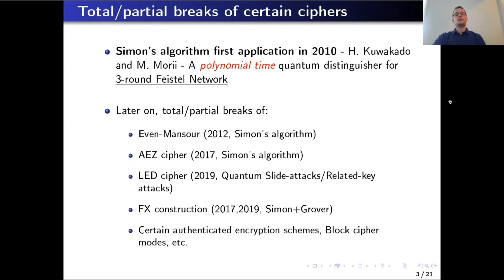The attention of the community in quantum cryptanalysis of block ciphers started in 2010 after the work of Kuwakado and Mori, in which they applied Simon's algorithm for the first time to construct a quantum distinguisher for a three-round Feistel network. This has been a motivation for re-evaluating the security of many other block ciphers. The list on this slide is a short one, which provides enough motivation for continuing to re-evaluate the security of other block ciphers, as we are considering the type 3 generalized Feistel network in our work.